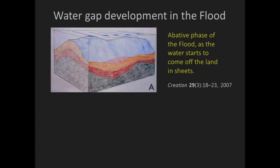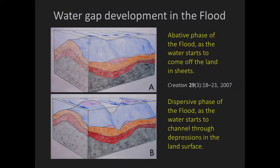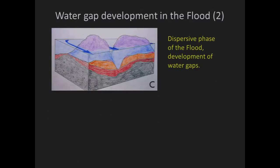Here's a schematic in four stages. The abative phase — the sheet phase — water flowing off the land in great sheets. The water flow reduces and becomes a little shallower. Then the sheets of water become shallower and more channelized — the dispersive phase of the flood. The water then exposes land to view. Channelization at this stage has enormous potential to erode valleys and gorges, with a tremendous amount of energy in fast-moving water carrying a sediment load including large rocks.